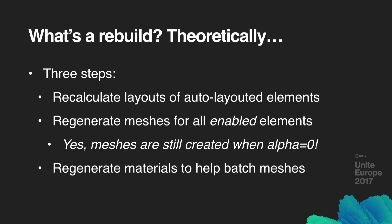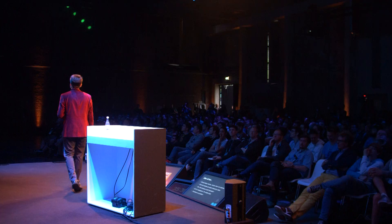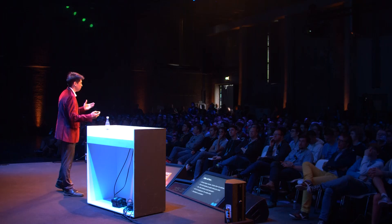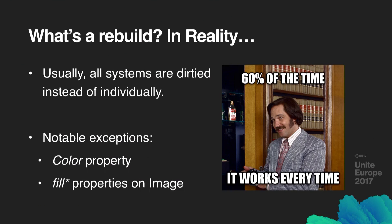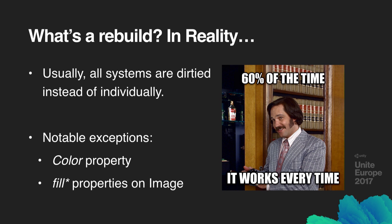The last step is regenerating the materials used to draw the UI. This is usually a relatively quick step, and I've never found it to be a cause of performance problems. While these systems all appear to be able to be dirtied individually, in practice whenever we dirty one we end up dirtying all of them. There are a few notable exceptions: if you change the color of a graphic we'll only dirty its vertices; if you have a UI Image and change a fill property like FillAmount or FillCenter, we'll also only dirty its vertices.